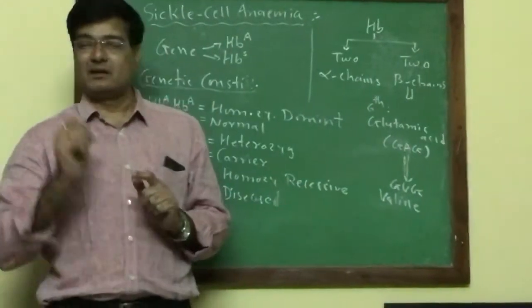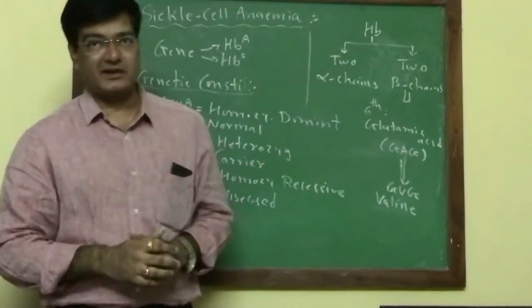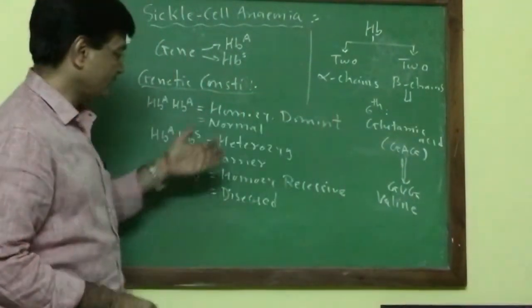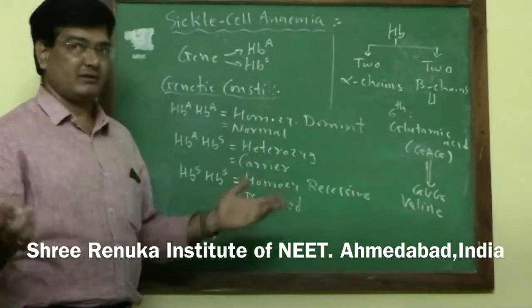The RBCs change in shape and become sickle-shaped, and that's why this condition is called sickle cell anemia. This condition is generally found in African people. Now it is found everywhere, but initially it originated in Africa.